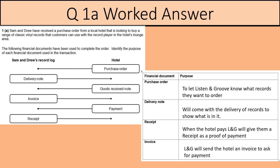Finally, we've got an invoice. Listen and Groove will send the hotel an invoice to ask for payment. Those are four things, one mark for each. If you didn't get them, you need to revise their straightforward definitions.